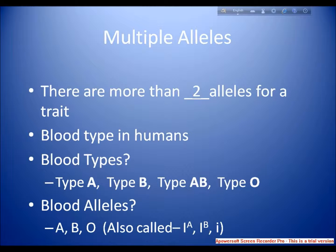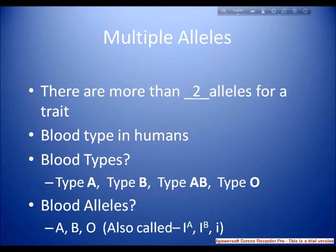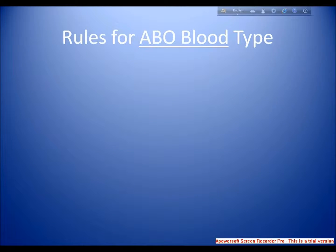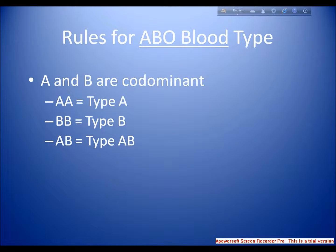A classical example of multiple alleles is found in the ABO blood group system of humans. The RBCs of people with type A blood group contain A antigens. Those with type B blood group contain B antigens. Those with type AB blood group have both A and B antigens, and those with type O blood group do not have any A or B antigens.